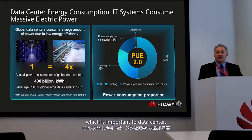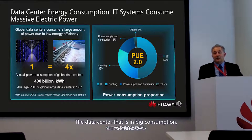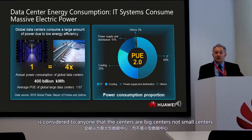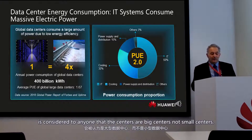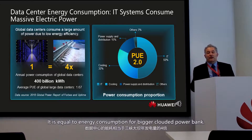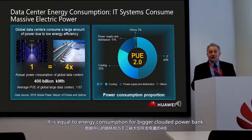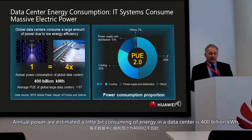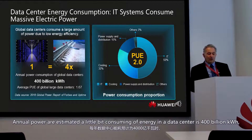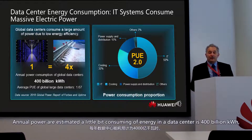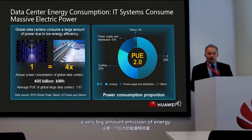What is the importance of data centers? Data centers have very big energy consumption. It is considered that one big data center is equal to the energy consumption of four large hydroelectric power plants. Around the world, it is estimated that the total energy consumption of data centers is 400 billion kWh — a very large amount of energy.